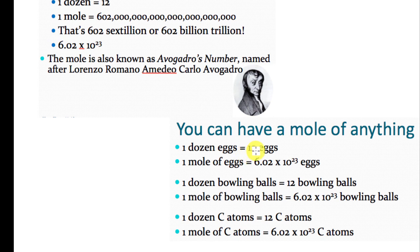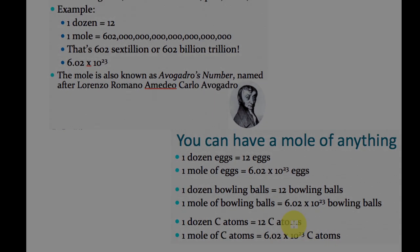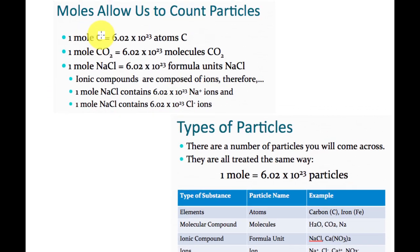So: if we have a dozen, we have 12. If we have a mole of eggs, we have Avogadro's number of eggs. A pair of shoes is two shoes. A ream of paper is 500 pieces of paper. A baker's dozen is 13. A dozen bowling balls is 12 bowling balls. A mole of bowling balls would be 6.02 × 10²³ bowling balls. A dozen atoms of carbon is 12 atoms of carbon; one mole of carbon atoms is Avogadro's number of carbon atoms.